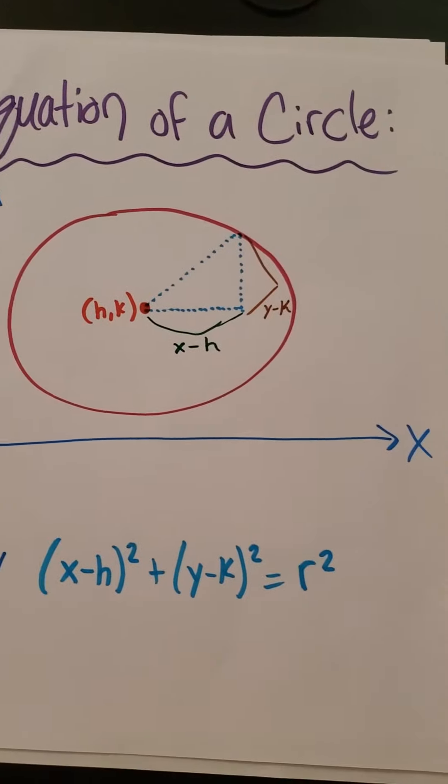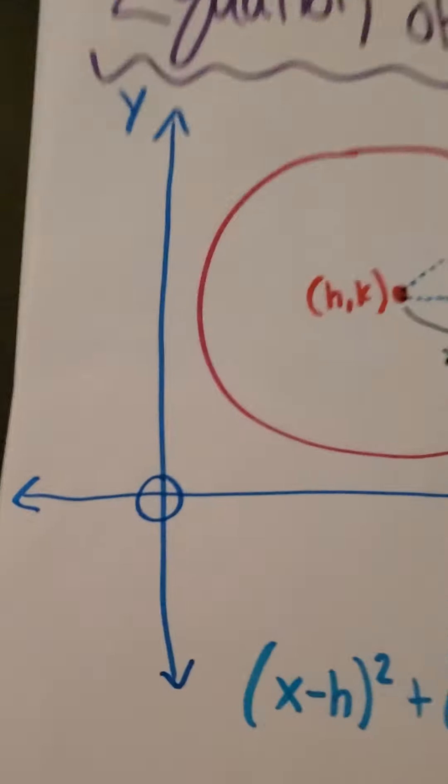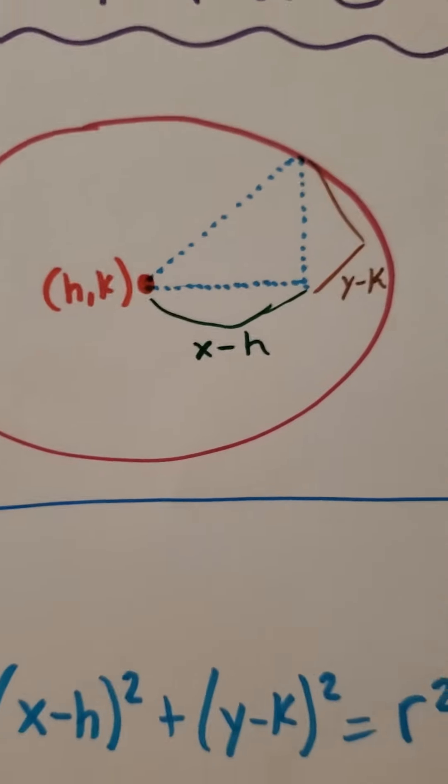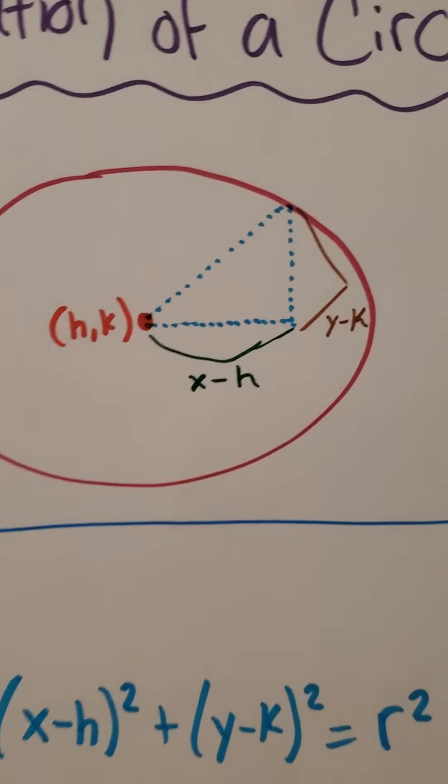So first we have our y and x axis, zero point right in the middle where they cross. Here's our circle right here.